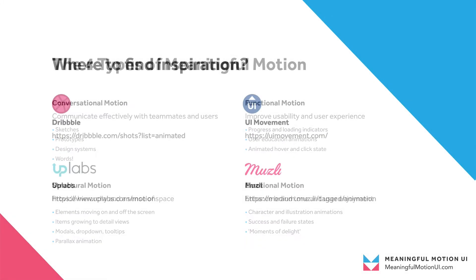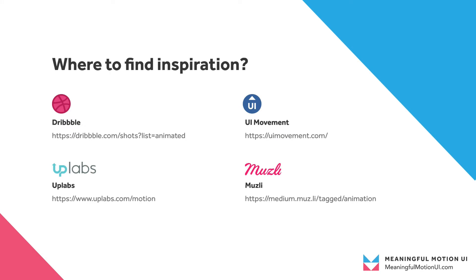The best places for motion design inspiration are Dribbble, UI Movement, Uplabs, and Muesli. There are hundreds of examples from motion designers, but when looking at these animations it's good to think about what category they fall in, why a designer made certain decisions, and what elements are relevant to our own projects.